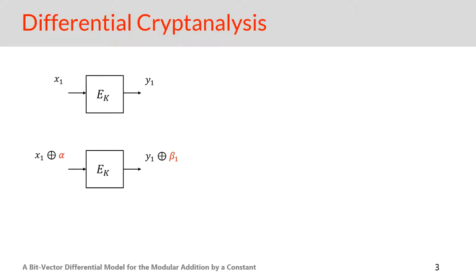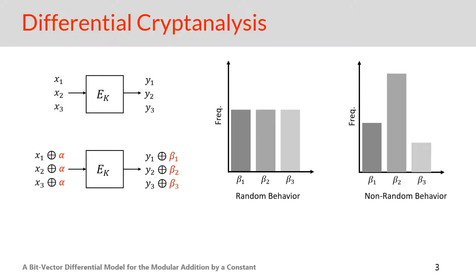We evaluate the security of constant addition against differential cryptanalysis, which is a powerful tool to analyze ARX ciphers. The idea is that the attacker encrypts pairs of plaintexts alongside their constant difference alpha, so the attacker gets the distribution of the output difference beta. For a random function, the distribution is almost uniform, but for other functions some specific betas are more probable.